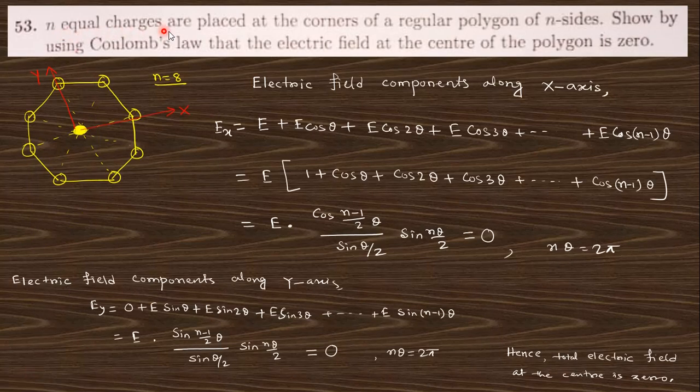Next question: n equal charges are placed at the corners of a regular polygon of n sides. Using Coulomb's law, find the electric field at the polygon center. You can take two axes, x and y. The electric field components will be E_x and E_y. Total E_x will be 0 and total E_y will also be 0, since the total electric field will be 0 at that point.